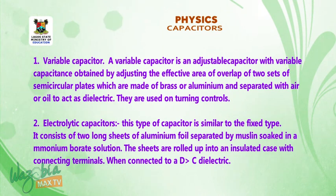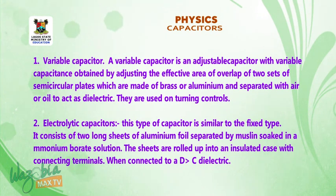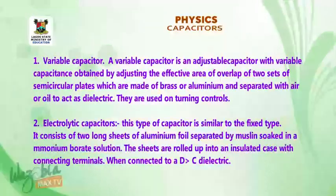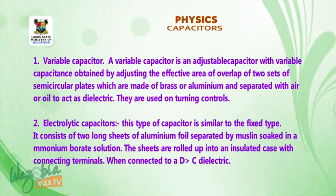They are used on tuning controls. 4. Electrolytic capacitor. This type of capacitor is similar to the fixed type. It consists of two long sheets of aluminum foil separated by muslin soaked in ammonium borate solution. The sheets are rolled up into an isolated case with connecting terminals.